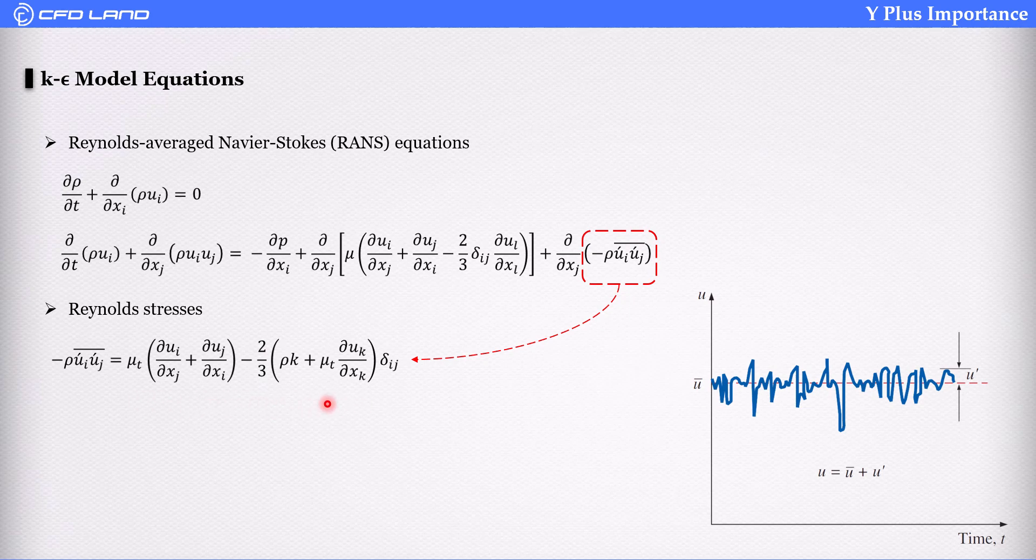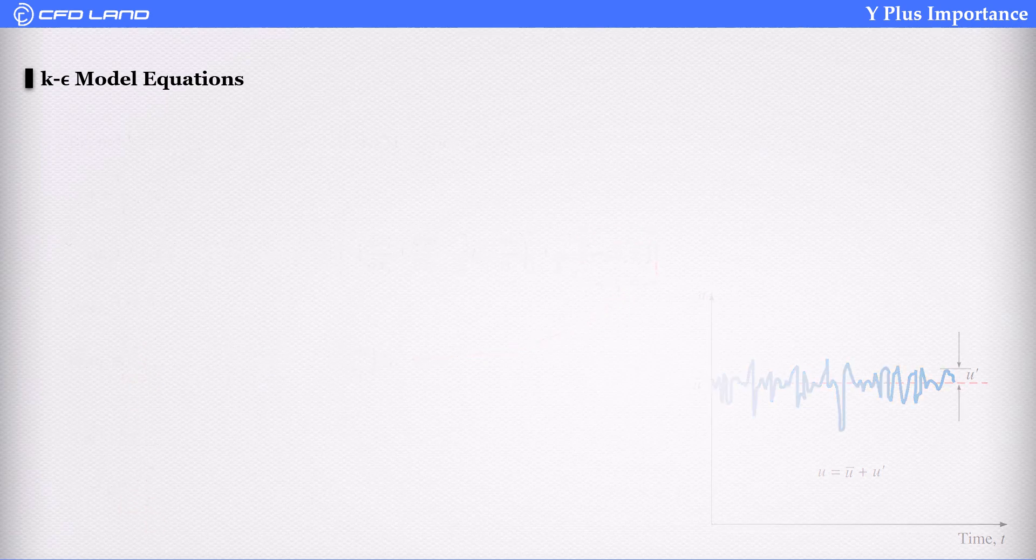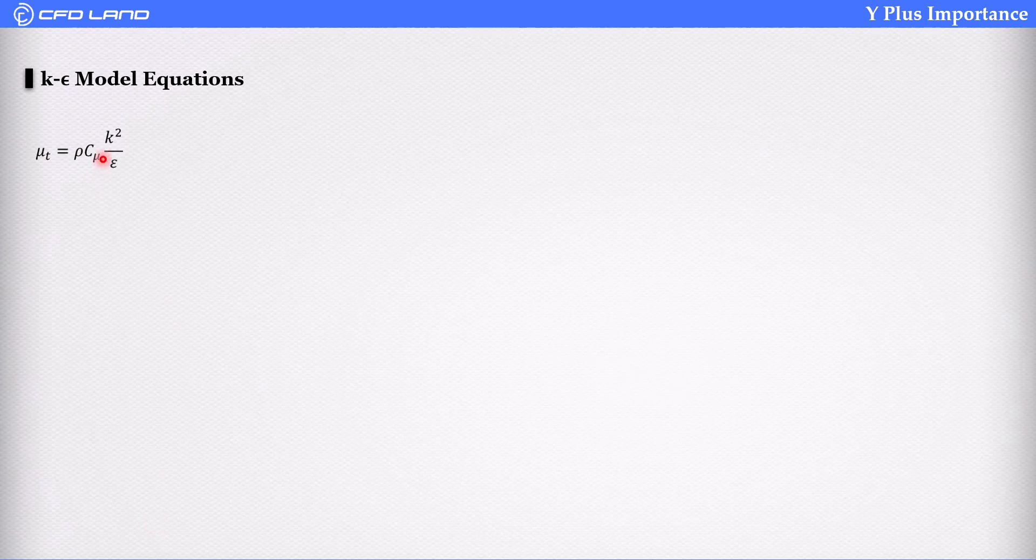We use Boussinesq Hypothesis to rewrite the term. In Boussinesq Hypothesis, there is a parameter mu_t called eddy viscosity or turbulent viscosity, and it is achieved through density times C_mu times k squared divided by epsilon. Now, we need to have k and epsilon, kinetic energy and dissipation rate.